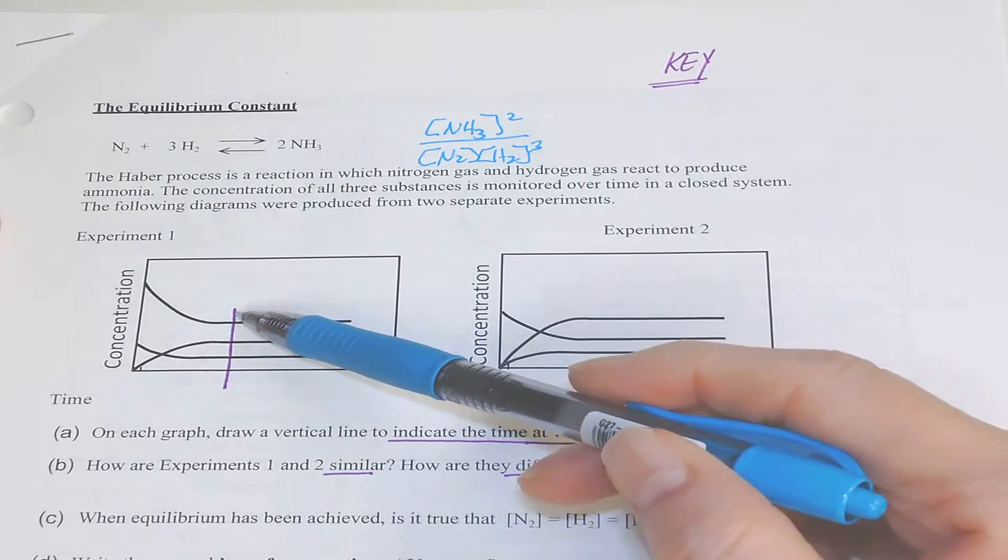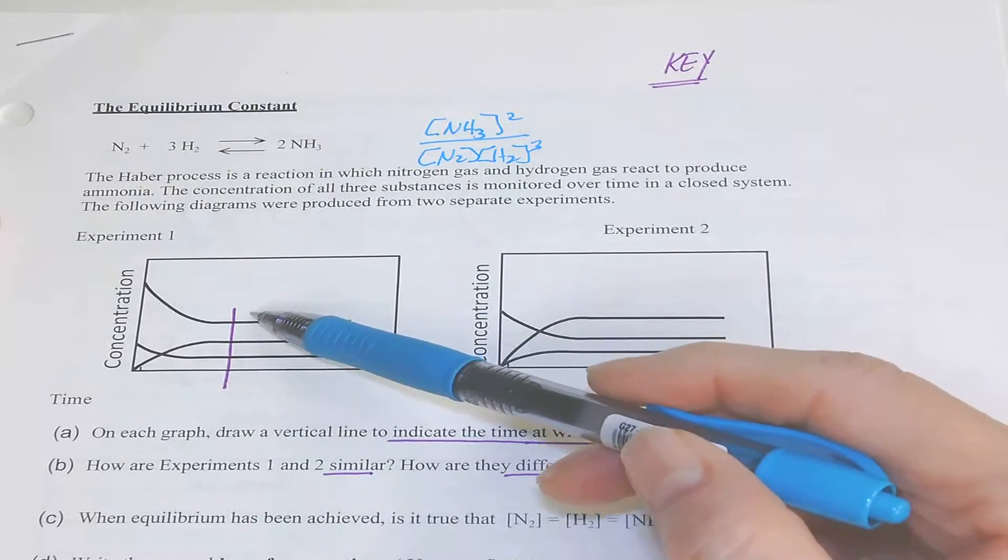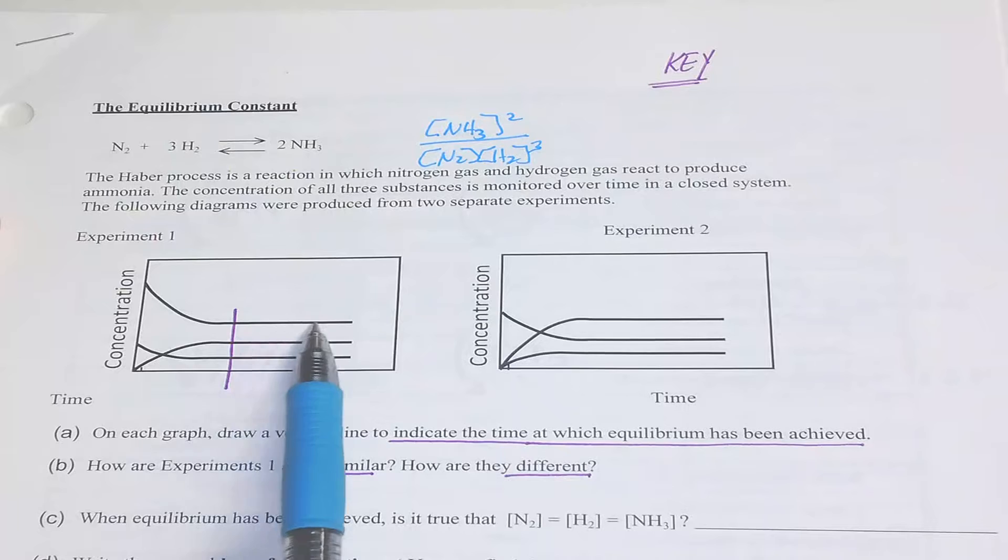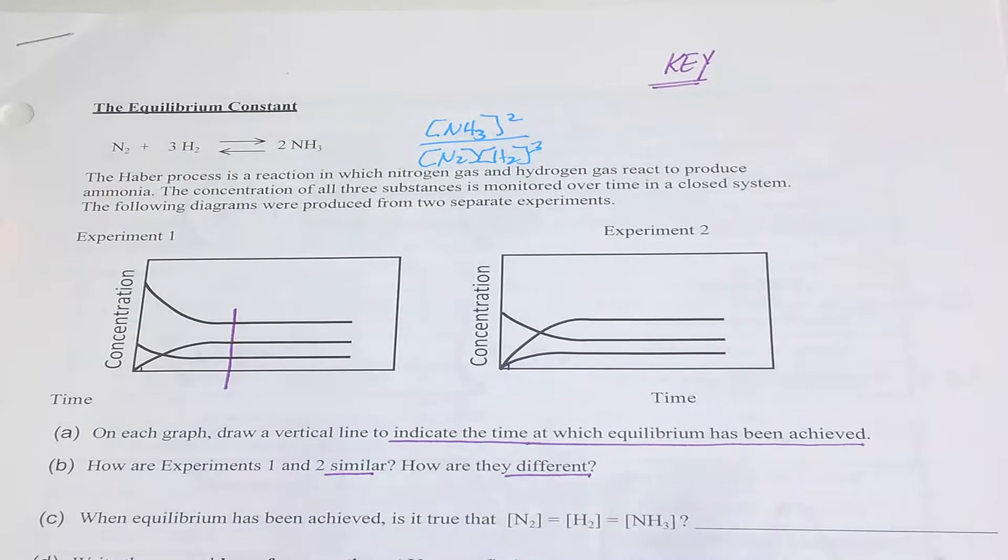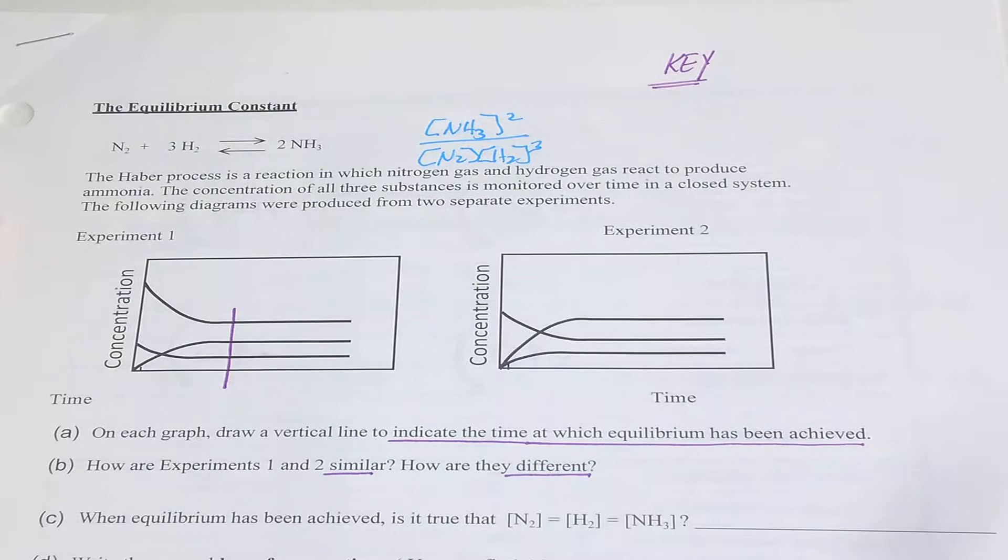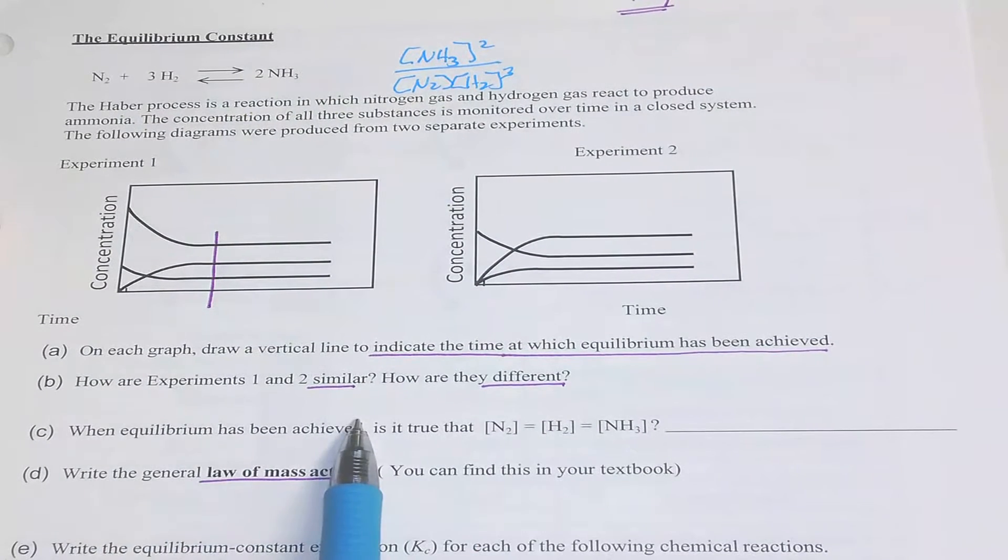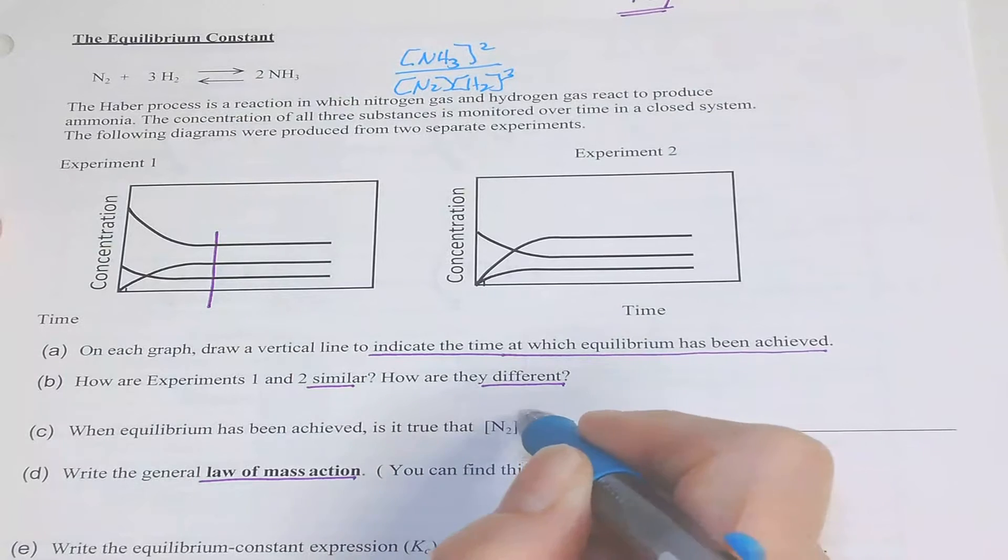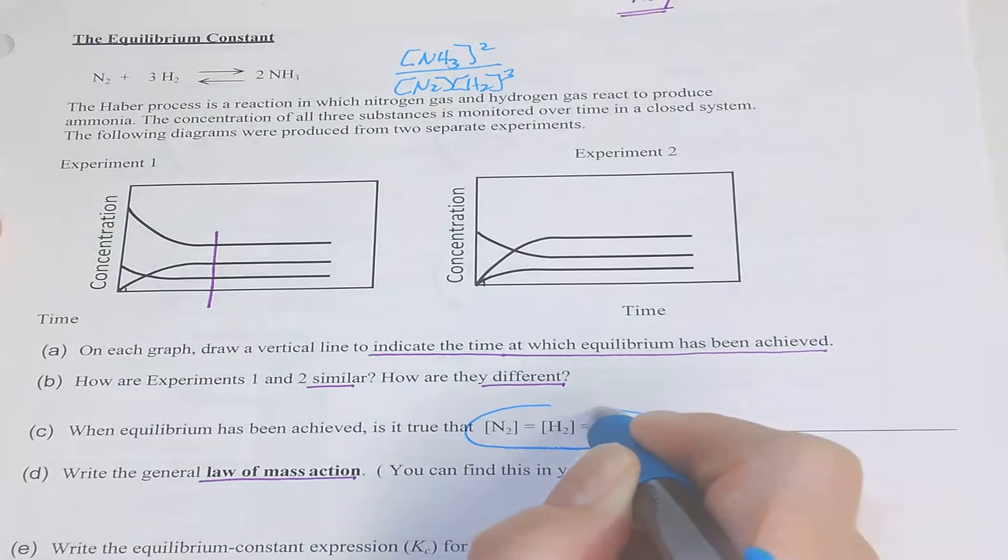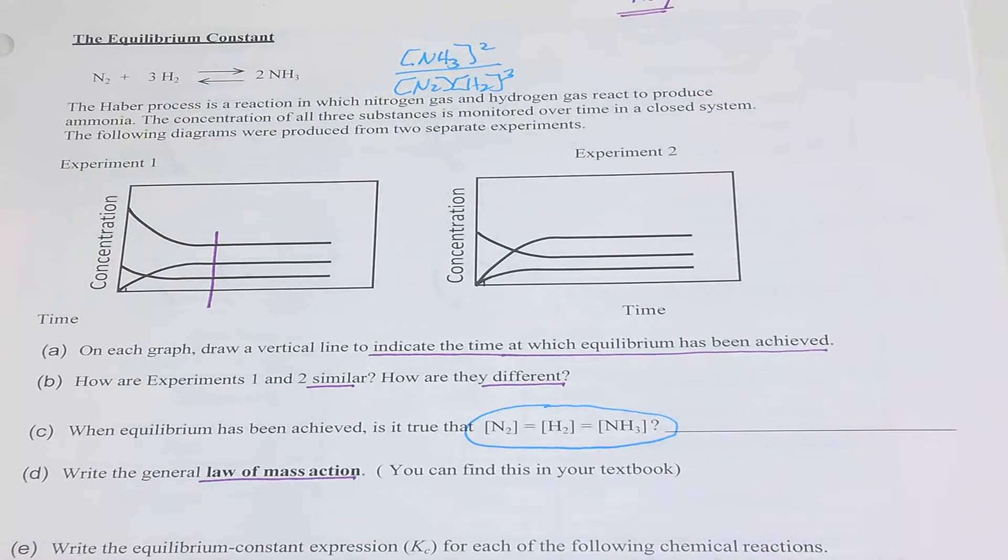We reached equilibrium at the same point where you have no net change in that equilibrium concentration. So think about this, when equilibrium has been achieved, is it true that these are equal? And be able to explain that.